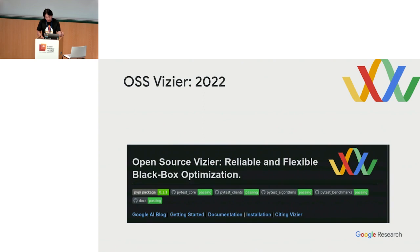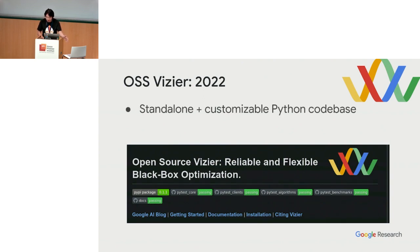Open Source Vizier was released in 2022. It's a standalone and customizable Python code base. The user can host their own services — you don't need Google to host your service at all. You can do it yourself, which means you have control over almost everything.